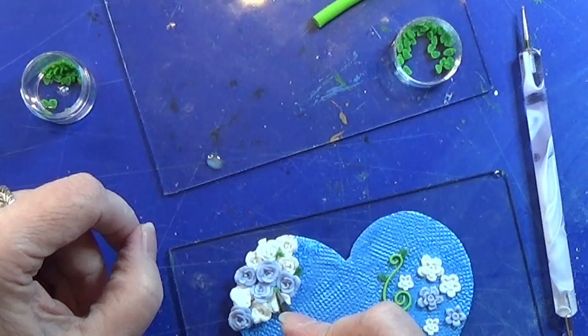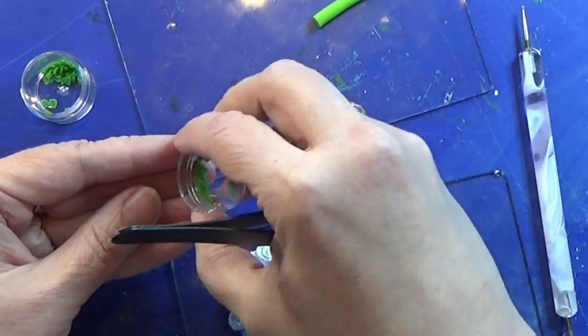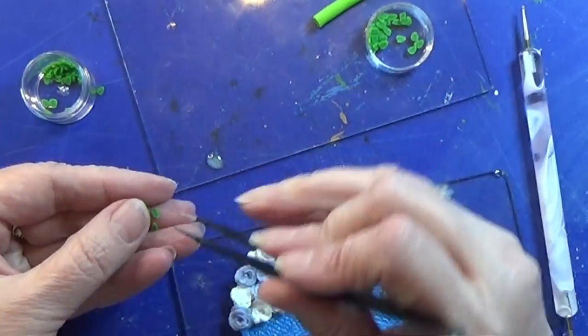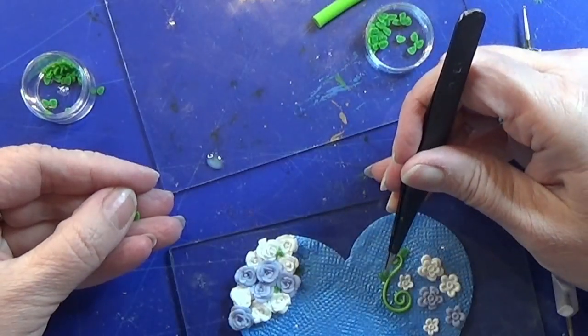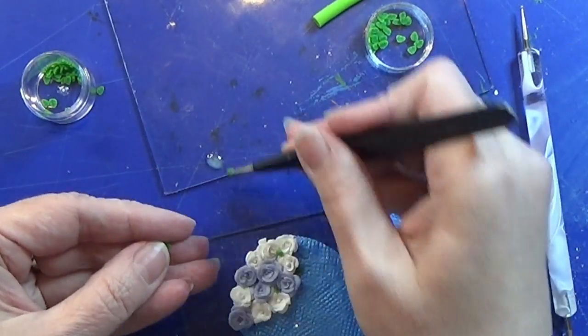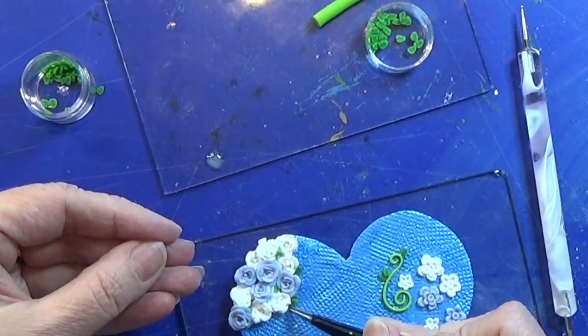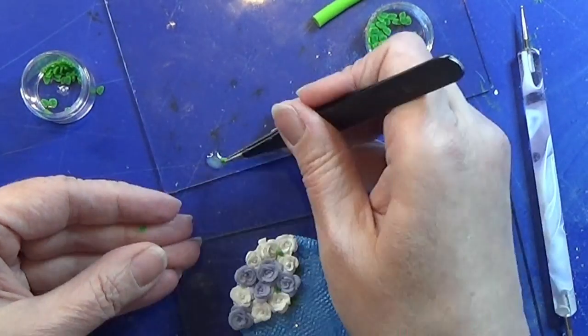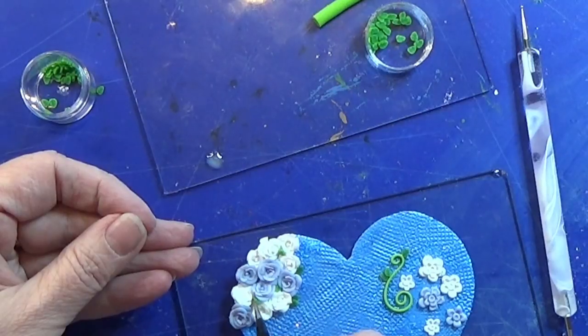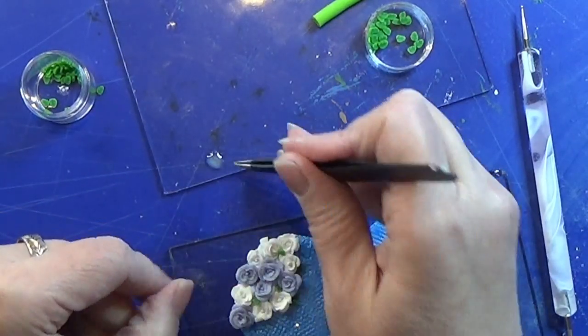I continue to make flowers and roses and these green snakes all over the place on the heart just like I want it to. So I think it's nice and not too overfilled. Just keep working on it.